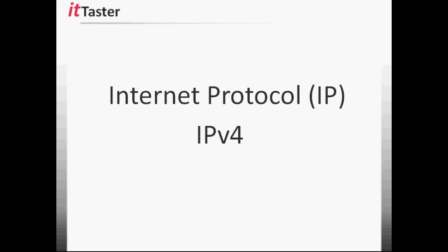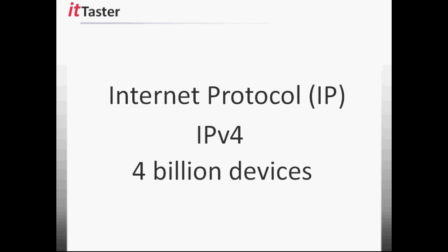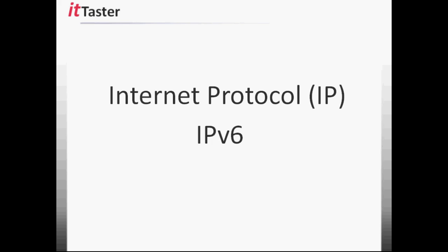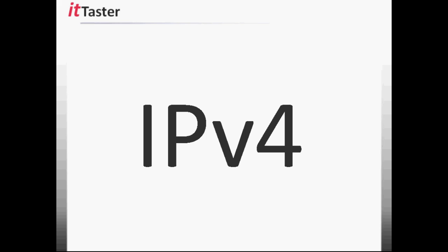IP version 4 has been around for a very long time. It was intended to cater for approximately 4 billion devices. However, the internet has grown considerably since IP version 4 was first introduced and it soon became clear that IP addresses were eventually going to run out. A new solution was needed and this came in the form of IP version 6. However, IP version 4 still remains widely in use today and it's going to be around for quite some time, so it's essential to have a good understanding of IP version 4 addressing.